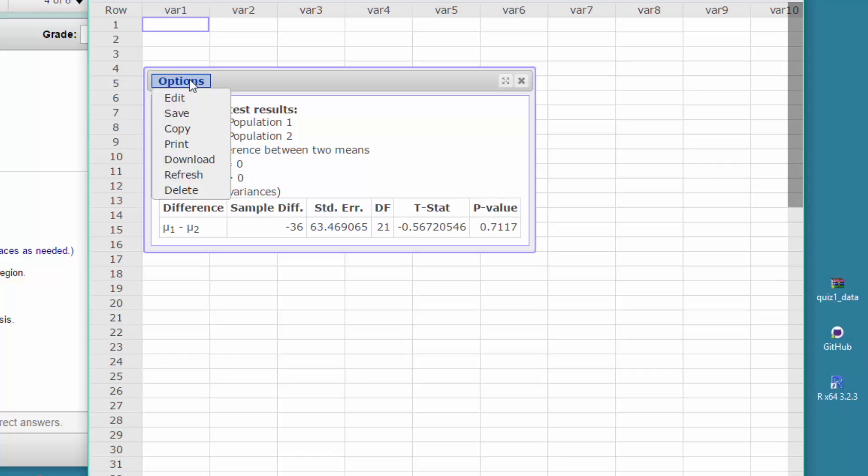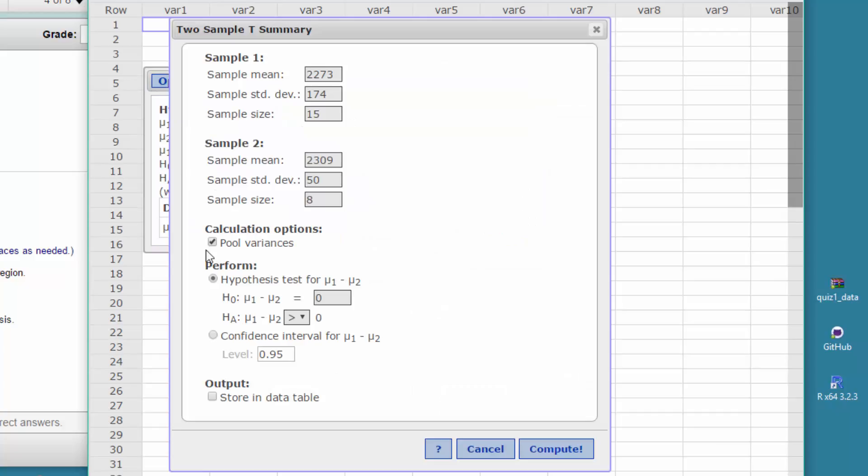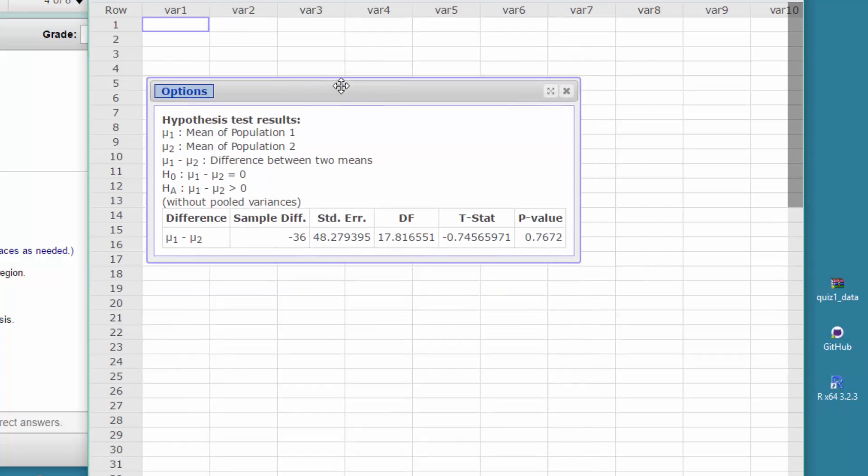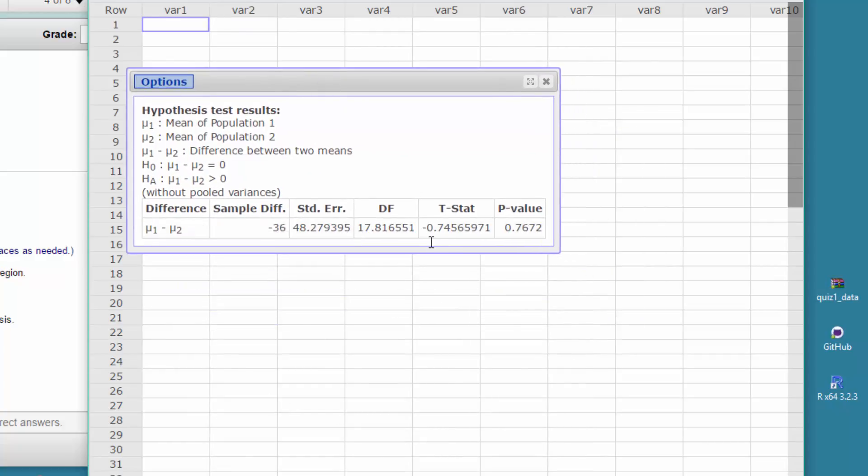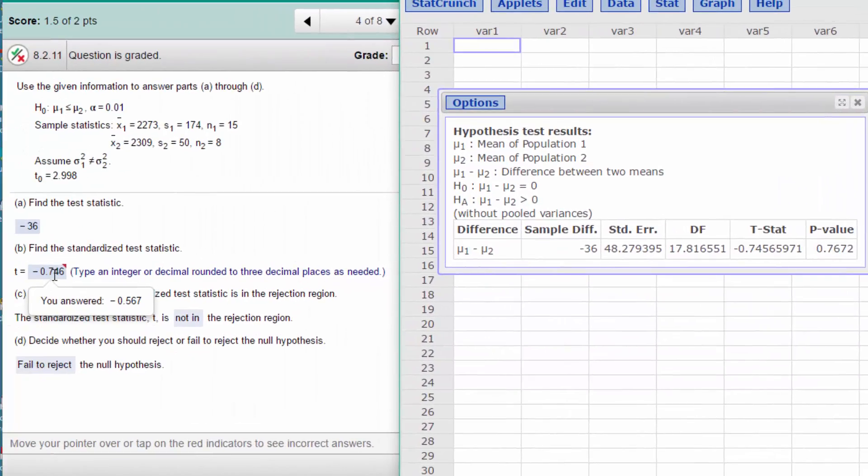So let's go back and we're going to edit, and we're going to uncheck pool variances. That means that we have unequal variances. Leave everything else the same. We'll click compute. We get this answer now: a standardized t statistic of minus 0.746, which is the correct answer.